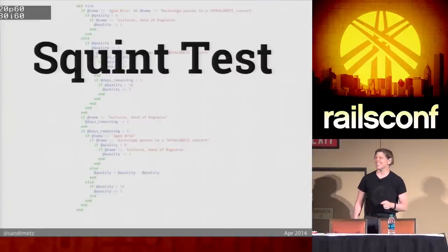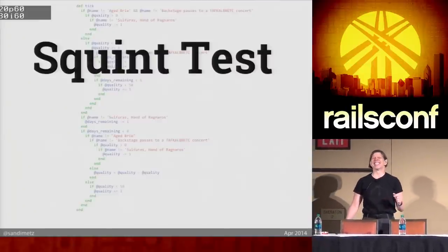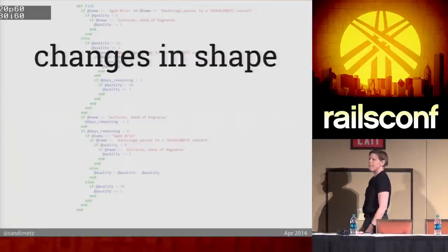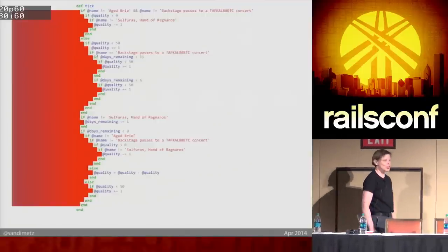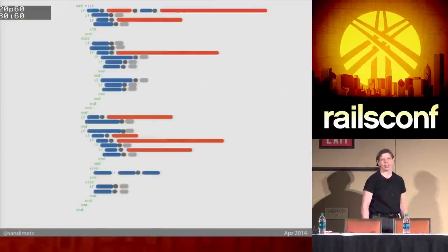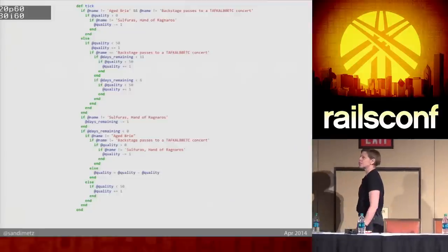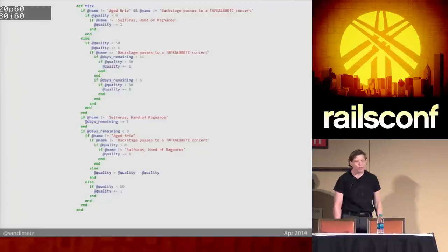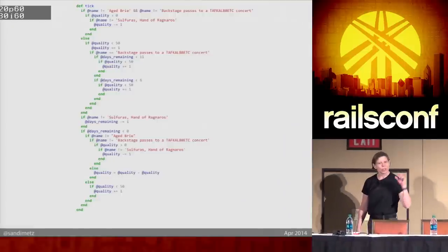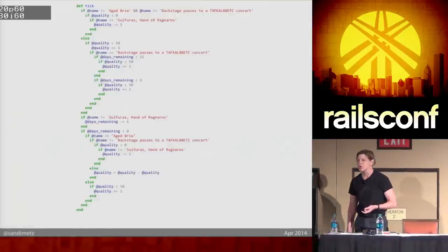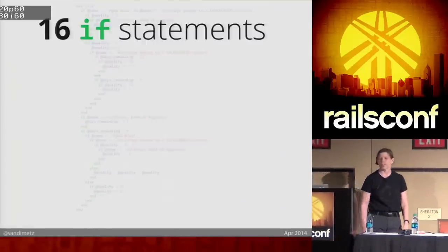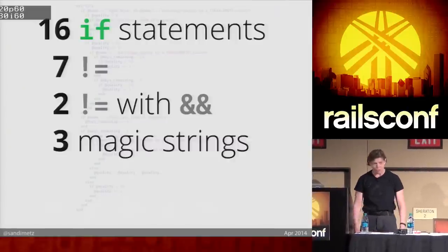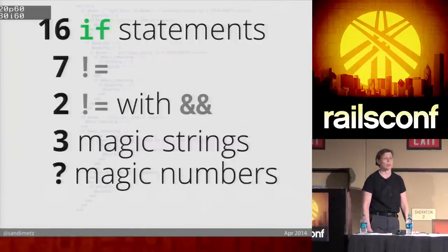Here's how it works. You squint your eyes, lean back, and look at the code. We're looking for changes in shape and changes in color. Changes in shape mean you have nested conditionals, and they are always going to be hard to reason about. Changes in color mean that your code is at differing levels of abstraction, and the story it tells is going to be hard to follow. Now, what is it about this code? It has 16 if statements. Seven of those are 'not equal.' Two connect something with 'and.' There are three magic strings used all over, and a number of magic numbers.